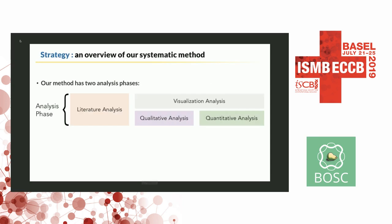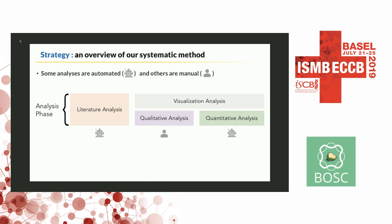So that is what I did. I created a method that has two phases: the first is a literature analysis phase, and the second is a visualization analysis phase. Within the visualization analysis phase, I employ both a qualitative and a quantitative analysis. Some aspects of this method are fully automated, and some aspects — like the qualitative analysis phase — require a lot of human and manual curation, a student in the loop.